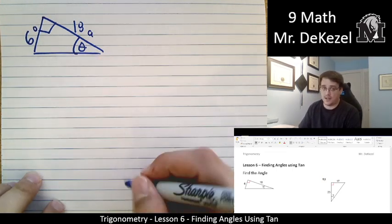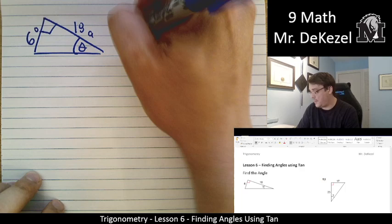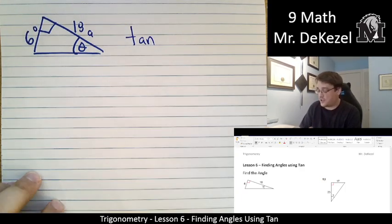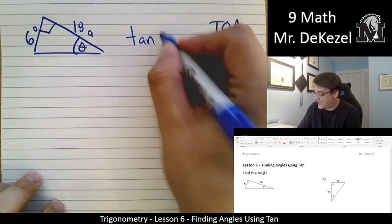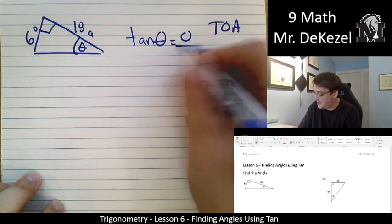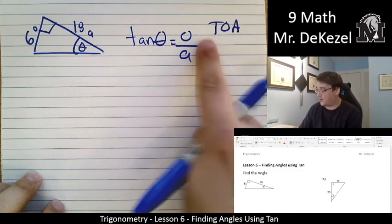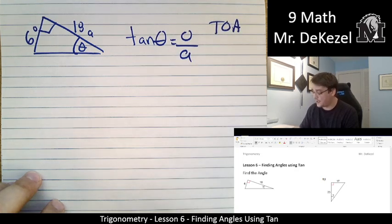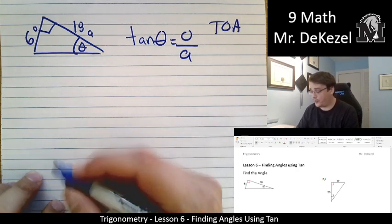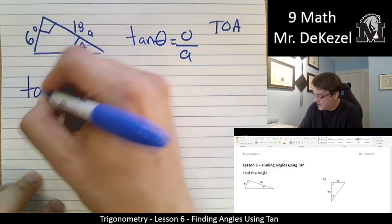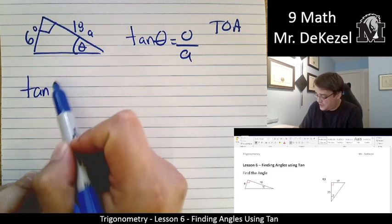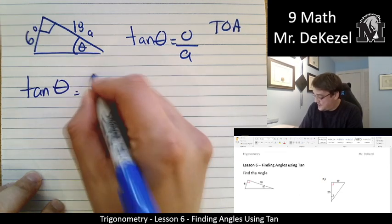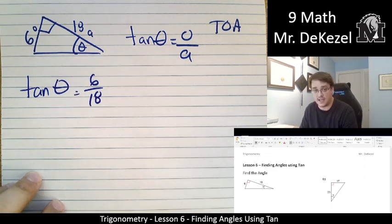So opposite and adjacent, at this point we may know that it is tan, and opposite over adjacent, right? TOA, so tan of theta is equal to the opposite side over the adjacent side. So the order in which the letters come show us which ones come first, which one's on the top and which one's on the bottom. So let's go ahead and fill in what we know, what we don't know. So tan, and then what we don't know is theta, is equal to, opposite is 6, and adjacent is 18.